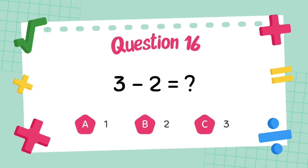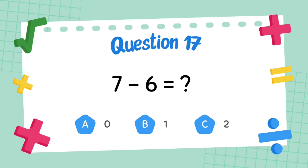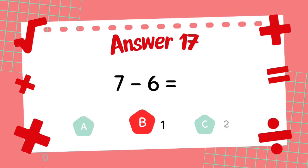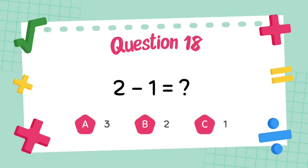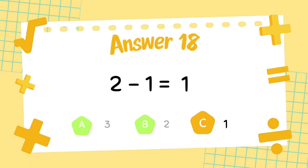What is 3 minus 2? The answer is 1. What is 7 minus 6? The answer is 1. What is 2 minus 1? The answer is 1.